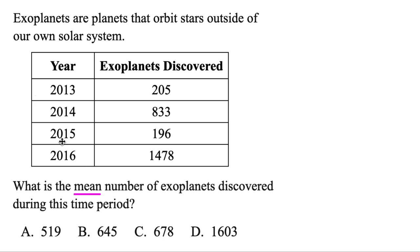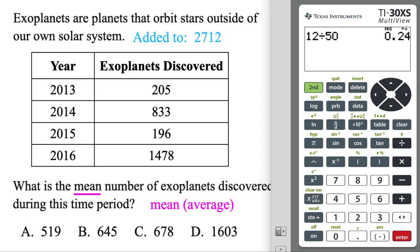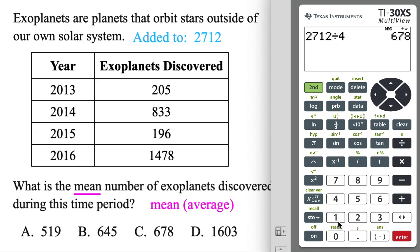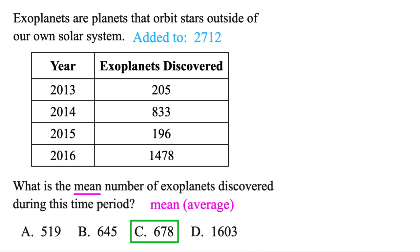To find the mean, it's the same thing as finding the average, and that's just a two-step process. First, you're just going to add everything up — I've already done that, it came to 2712. Then you're going to divide by how many things you have. We're talking about four different years, so just divide by four. 2712 divided by four is 678. So that's the mean — that's how many exoplanets were discovered each year. A lot of possibilities for some Earth-like planets there.